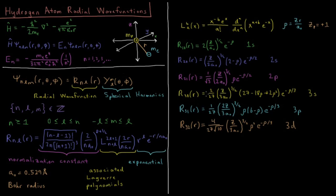r30, the 3s function, a constant times 27 minus 18 rho plus 2 rho squared, so now it's a quadratic polynomial for this Laguerre function, e to the minus rho over 3.